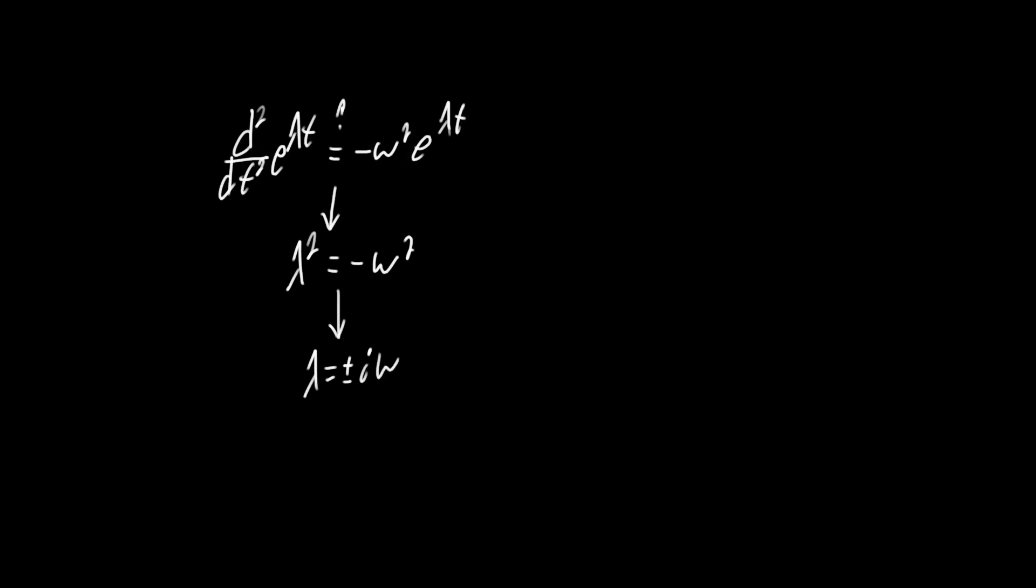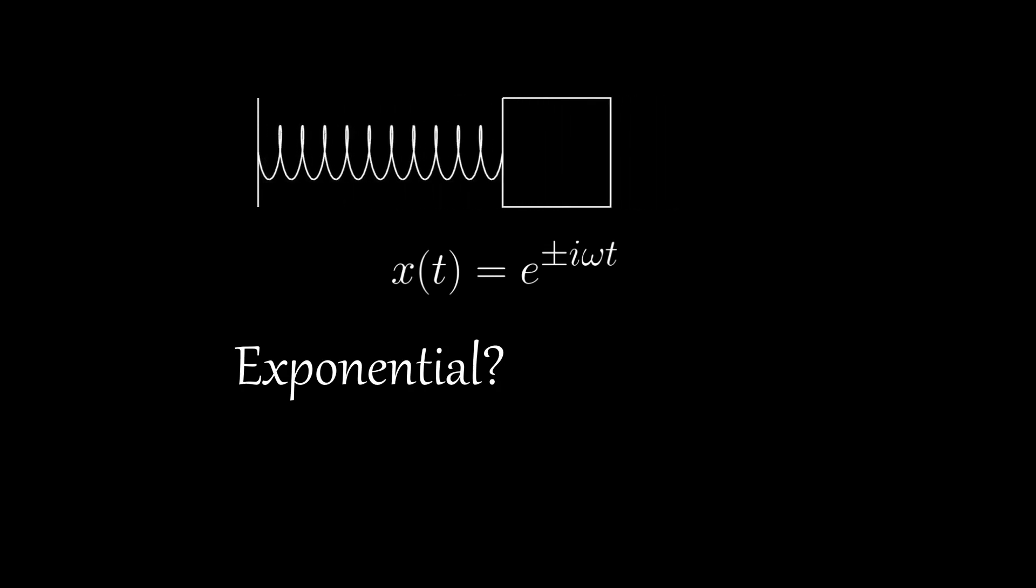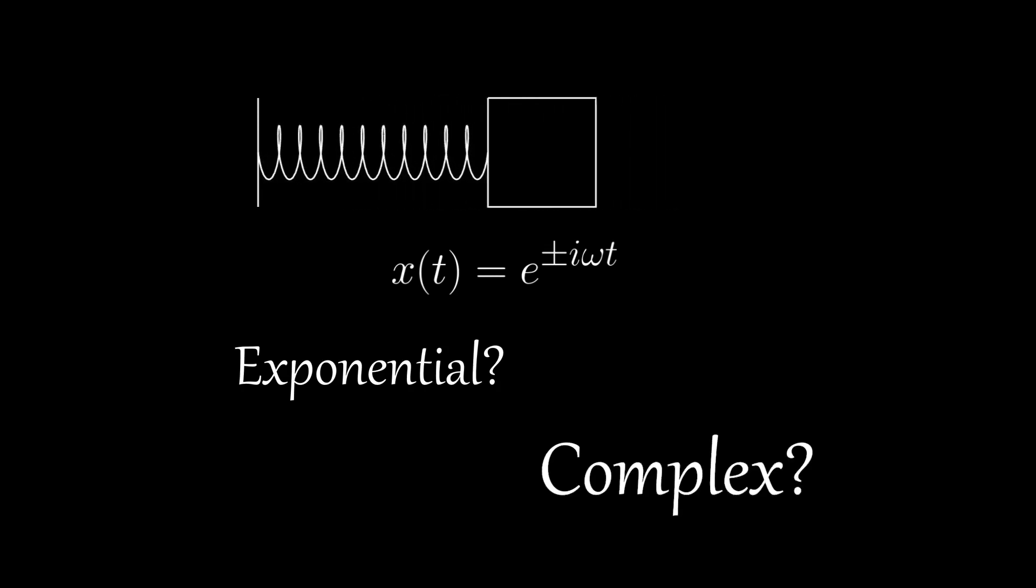Which certainly seems wrong, right? Because clearly the spring is oscillatory in nature, and exponential just grows or decays. Also our answer is complex, which certainly makes even less sense. But for the sake of argument, let us continue on, and see if we can derive a meaningful result from this.